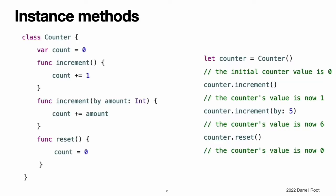Instance methods are functions that belong to instances of a particular class, structure, or enumeration. They support the functionality of those instances either by providing ways to access and modify instance properties or by providing functionality related to the instance's purpose. Instance methods have exactly the same syntax as functions. You write an instance method within the opening and closing braces of the type it belongs to. An instance method has implicit access to all other instance methods and properties of that type. An instance method can be called only on a specific instance of the type it belongs to.